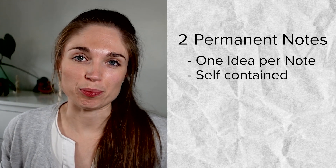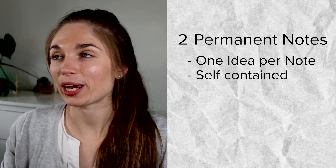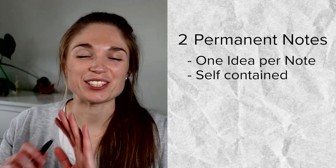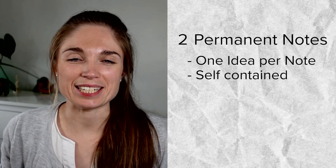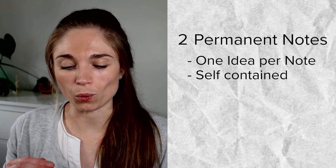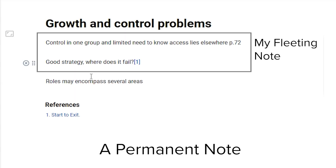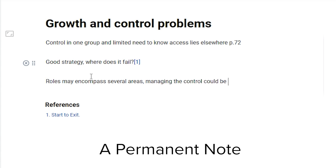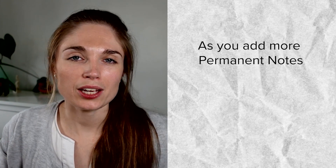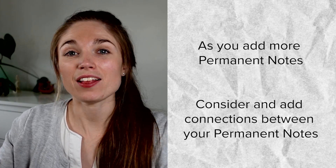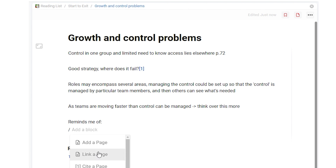Permanent notes should be standalone — there should be enough information in that note that you don't need to look anything else up or jump back to where it was in your book. These should not be long notes, just a few sentences enough to get the gist and understanding of what the concept is and why it's interesting to you. Transfer the original text and write it in your own words. If you can explain it in your own words, that's a good marker of you actually taking on board that concept. As your zettelkasten grows, you should be considering how new permanent notes relate to others already in your system, and you can add as many connections as you want.